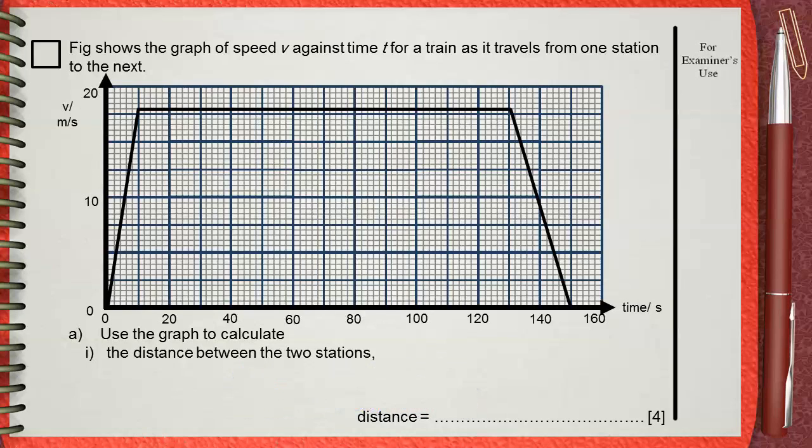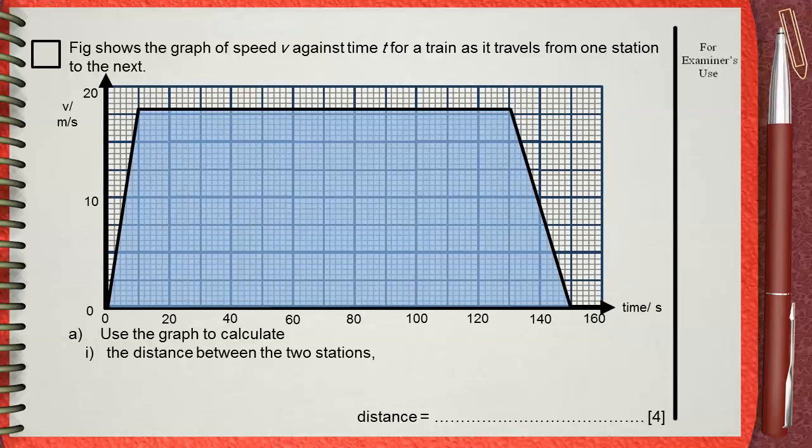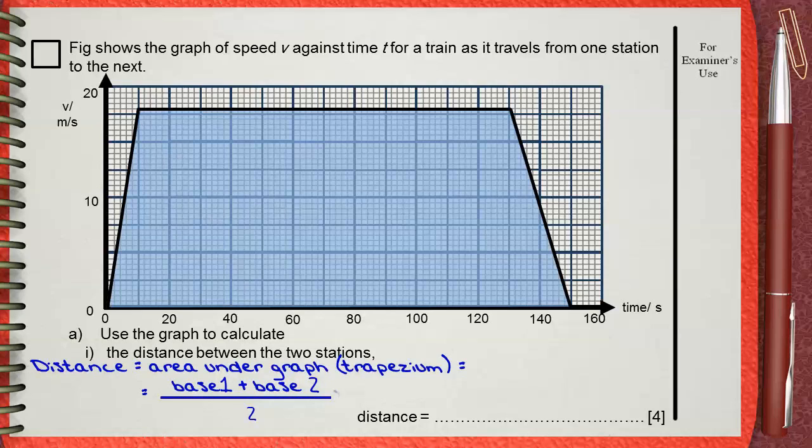You have a speed time graph, so the distance can be simply calculated by finding the area under the graph. This is a trapezium. Distance equals area under graph of the trapezium, which is given by base 1 plus base 2 divided by 2 multiplied by the height.